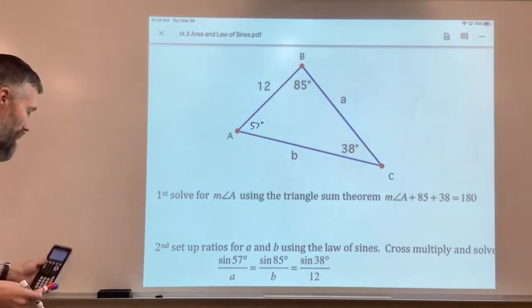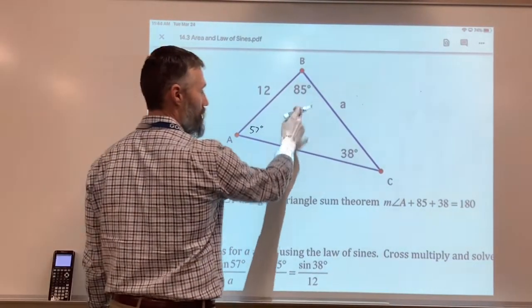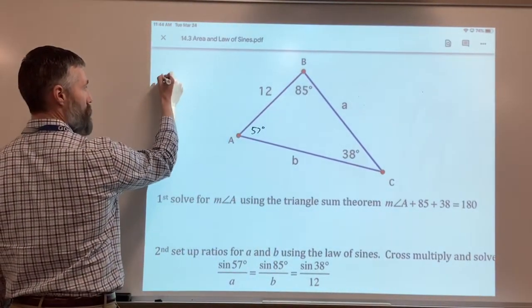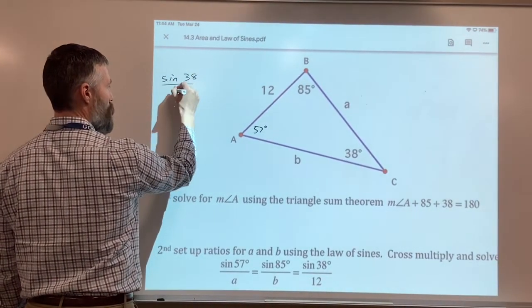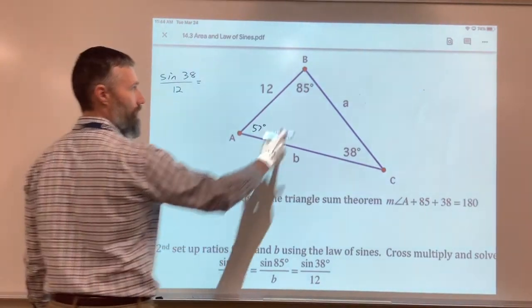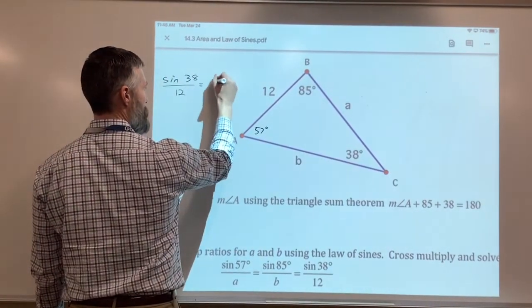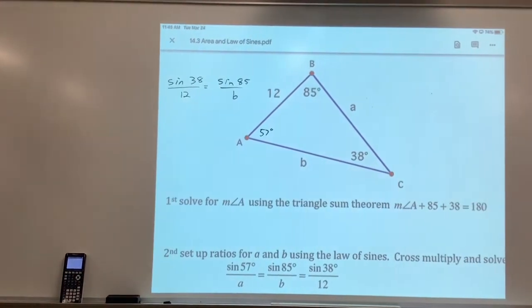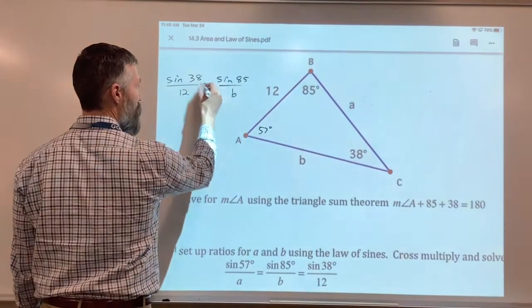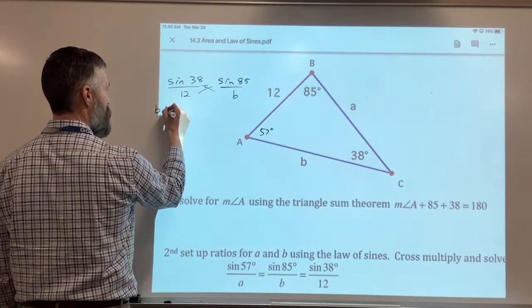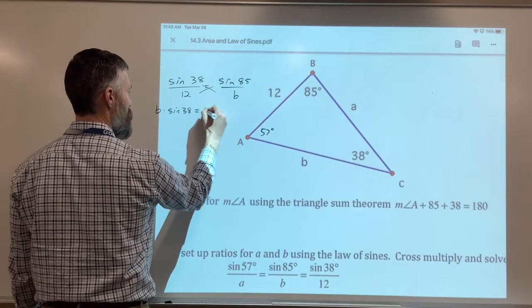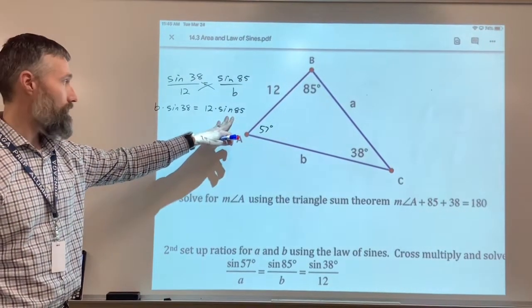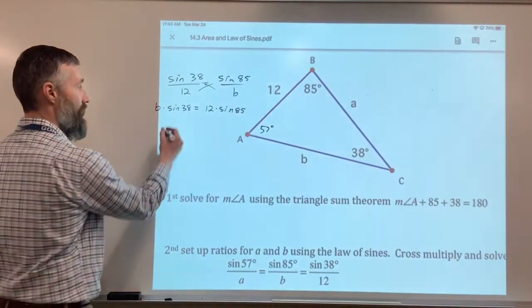Now, what I do is I set up my law of sines. I have an angle and a side, so I'm going to set that up. If they're across from each other, they're opposite angles to sides. I'm just going to say the sine of 38 over 12 equals the sine of 85 over B, unknown B. I've set up my proportion. Now all I do is cross-multiply and solve. So I have B times the sine of 38 equals 12 times the sine of 85. And again, sine of 85 is just a number. Sine of 38 is just a number. So I'm going to solve for B by dividing by the sine of 38.